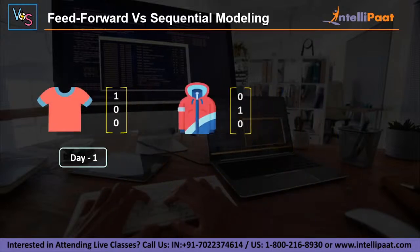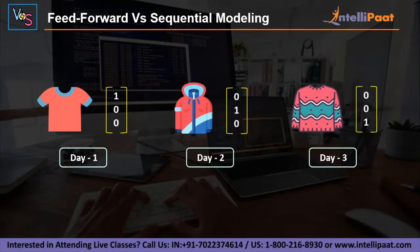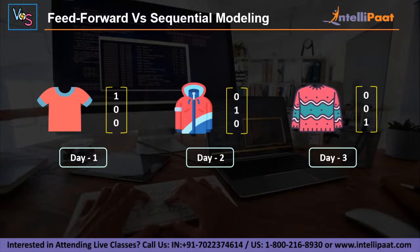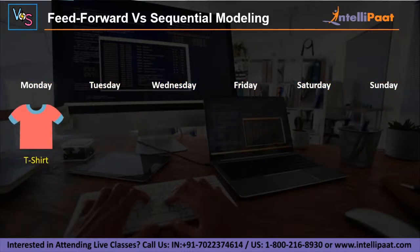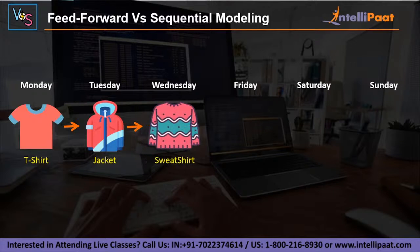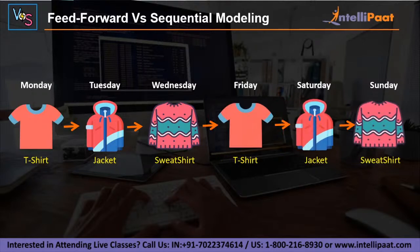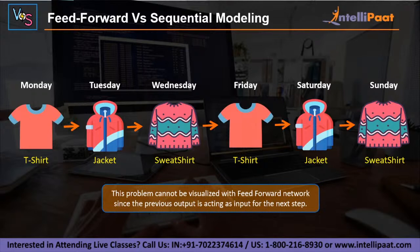Let's say Rachel has now decided to change the logic behind her daily wardrobe. She is planning to wear a t-shirt on the first day, jacket on the second, and sweatshirt on the third day — so t-shirt on Monday, jacket on Tuesday, sweatshirt on Wednesday, t-shirt on Thursday, jacket on Friday, sweatshirt on Saturday, and so on. Here, the wardrobe is completely dependent on the previous day's wardrobe. There is a sense of dependability in our data, which is why a simple feedforward neural network architecture won't work in this case.